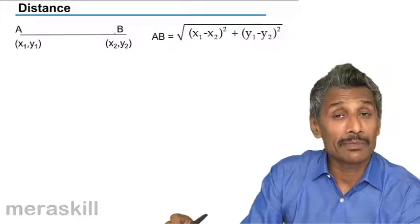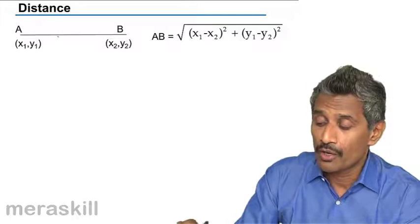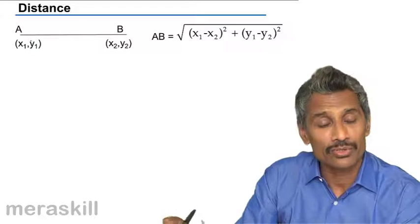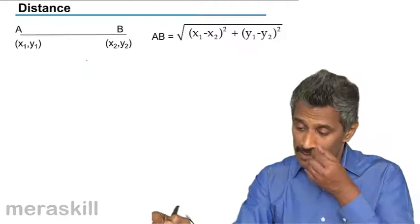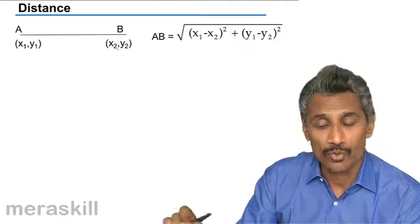Suppose there are two points A and B. Remember, don't mix this up with the slope. Slope is a ratio of the y coordinates to the x coordinates, whereas distance is you need to find the difference in y coordinate, square it.